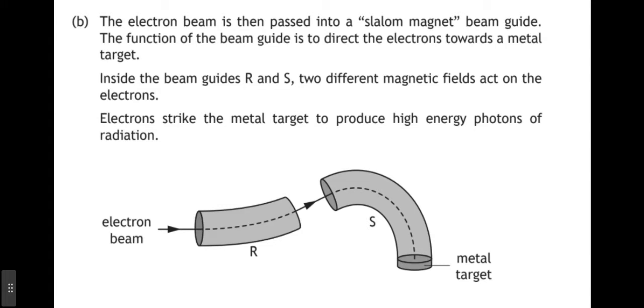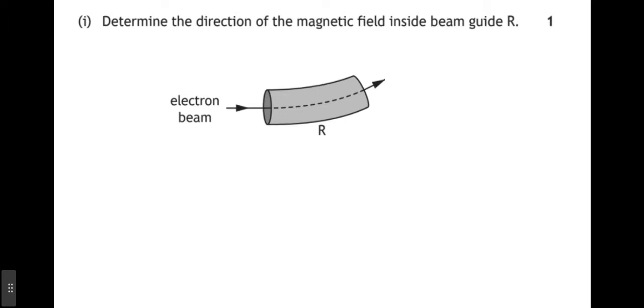The electron beam is then passed into a slalom magnet beam guide. The function of the beam guide is to direct the electrons towards a metal target. Inside the beam guides, R and S, two different magnetic fields act on the electrons. Electrons strike the metal target to produce high energy photons of radiation. So, we can see the electron beam enter on the left-hand side. It is bent upwards as it passes through the beam guide at R. And then its path is then bent downwards as it passes through the beam guide at S. So, determine the direction of the magnetic field inside beam guide, R.